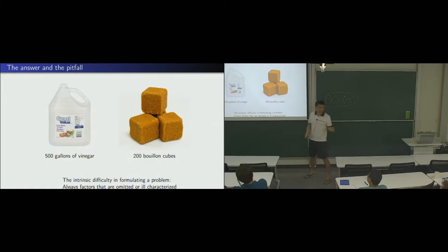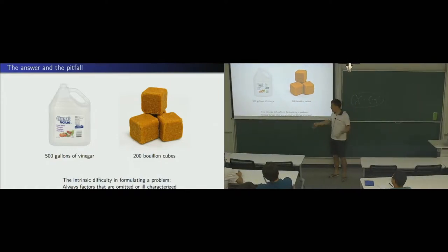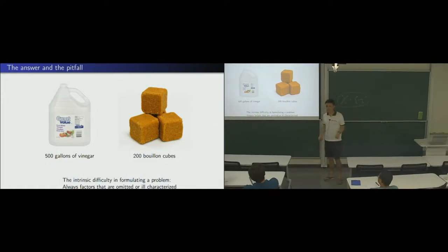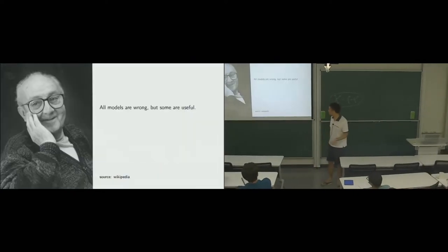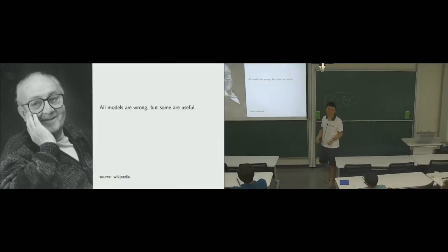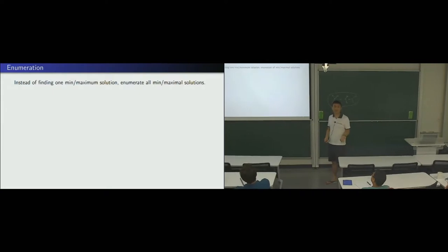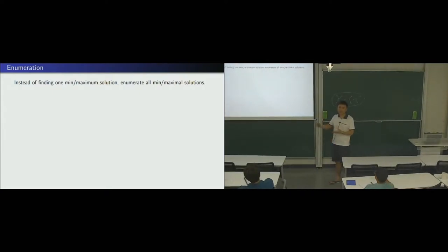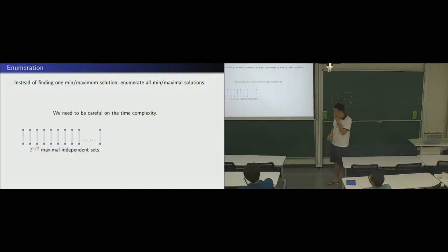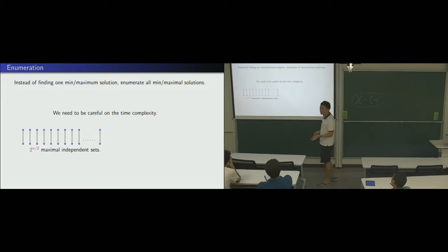So the issue is for any formulation. The trouble is there is something misformulated or something wrong. So you use the word of George Box. So this is very famous. All models are wrong, but some are useful. Okay? So that's the motivation of studying enumeration problems. We are not looking at just one optimal solution. We enumerate all the minimal solutions or maximal solutions. Okay? So that's somehow like, maybe some of the solutions are useful.